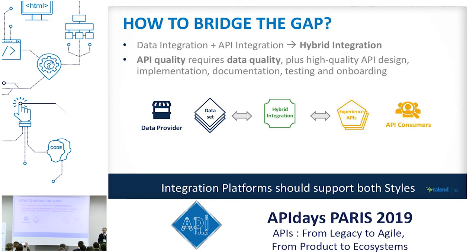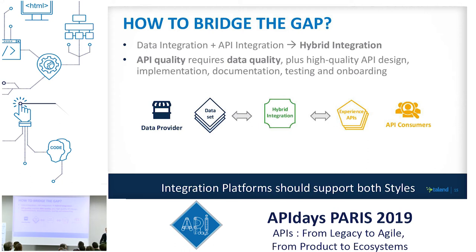One typical approach to bridge these gaps is integration platforms and technology. On the left you'll typically see data integration technology and data governance; on the right, application integration. The two combined together are called bridge integration. They work well together: a high-quality API can rely on high-quality data. There are a lot of similarities at the governance, quality, and design level, with a lot of benefits if you approach them in a consistent way together.